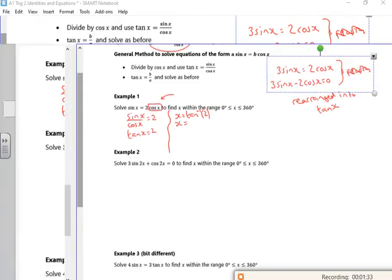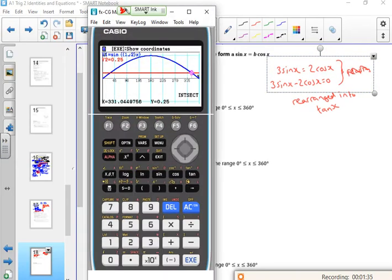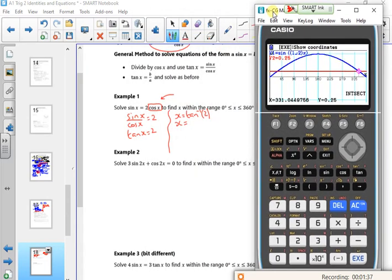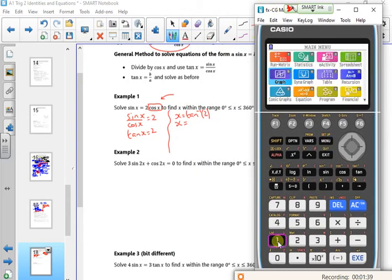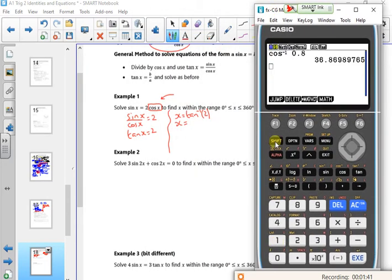Get the calc on the go. So menu 1, shift tan, 2 gives me 63.4. Remember that's the one that stays. Right, so I'm looking at tan x and 2 between 0 and 360.